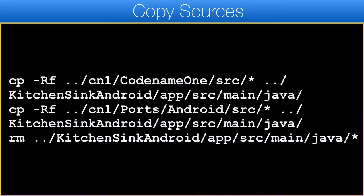The next step is copying the Android implementation sources into the project. Since the Android implementation sources don't include the Codename One sources, we need to start with those. These commands are executed from the kitchen sink directory so they are relative to that path. Notice we copy the Codename One code first and the Android code second so files get overwritten. We also delete all of the files at the root of the project source, not recursively, since the root of the Codename One and Android projects include resource files that should be placed in a different location.